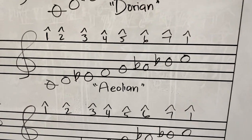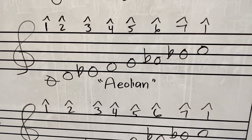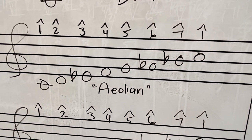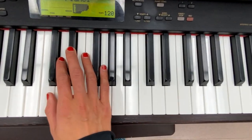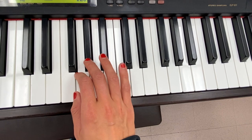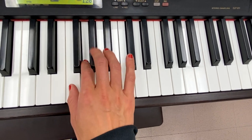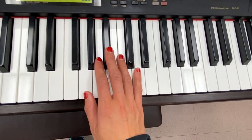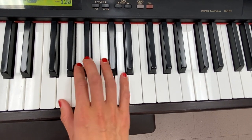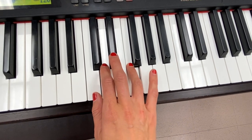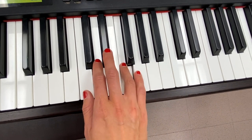The next mode is Aeolian — this is your typical natural minor scale. We have a lowered third, lowered sixth, and lowered seventh scale degree. In C Aeolian, it's the same as natural minor. In G Aeolian, the seventh is usually sharp, but it's lowered to F natural.